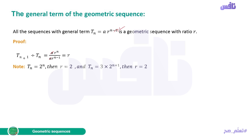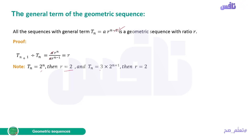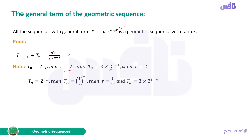For example, Tn = 2^n. The base is 2, so R equals 2. Another example: Tn = 3 · 2^(n+1), R equals 2 (the base). And Tn = 2^(−n): since the exponent is negative N, we rewrite 2^(−n) as (1/2)^n, so R equals 1/2.